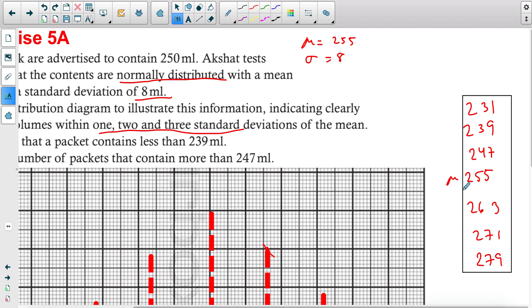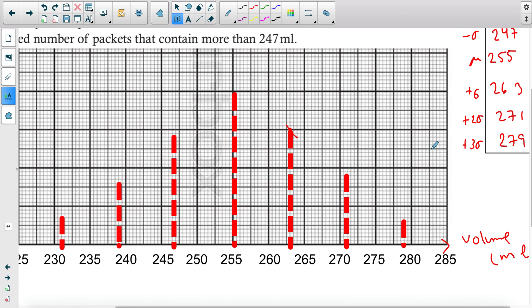I've started with my mean and then I added the standard deviation. So I added 1 standard deviation, 2 standard deviations, and 3 standard deviations, and then I subtracted them on this side. Then try to decide what scale you need to use in your x-axis for these values. I picked a scale of 5, so I start with 255 and then I add and subtract 5 on both sides.